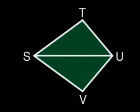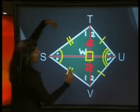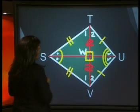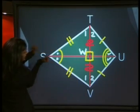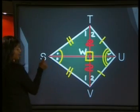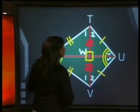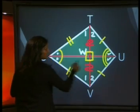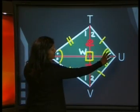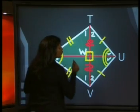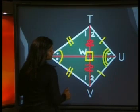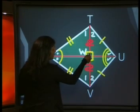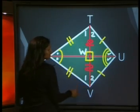We looked at the convex kite and found that one pair of adjacent sides were equal and another pair of adjacent sides were equal — two pairs of adjacent sides equal. The angle between the adjacent sides is called a vertex angle, at S and at U. The diagonal SU, which joins these two vertex angles, bisects the two angles at the vertex. This diagonal SU is also the perpendicular bisector of TV, with the angle at 90 degrees, and TW equals WV.